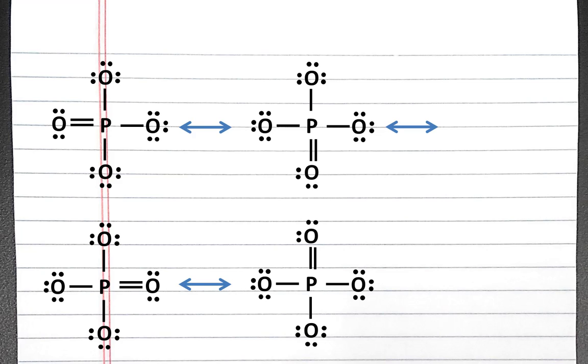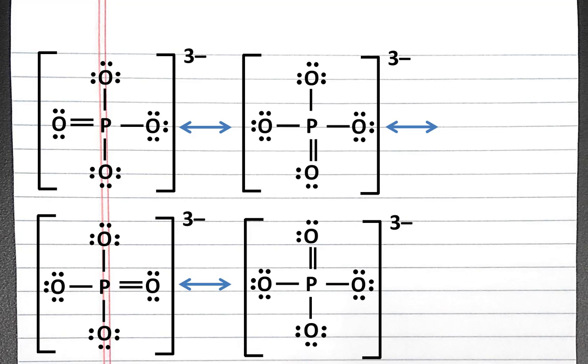To indicate that these are anions, we can put the Lewis structure in brackets and indicate the charge. So there are four resonance structures for the phosphate anion.